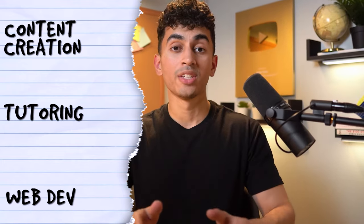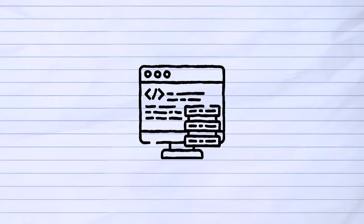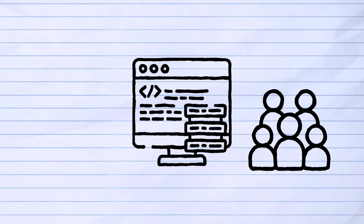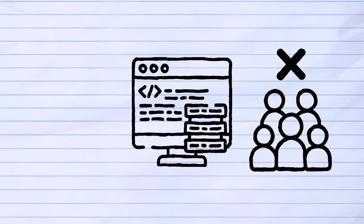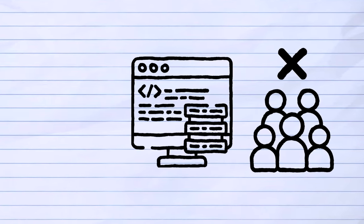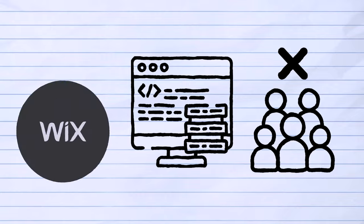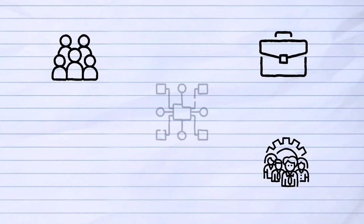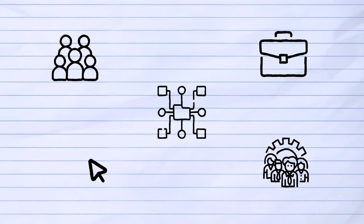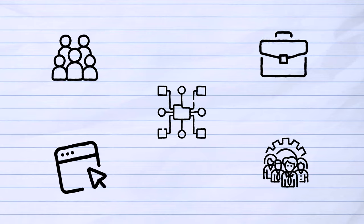The third side hustle is web development — and the reality is you don't even need to know how to code. Back in high school, I set up and managed a website for an organization in my community, and they didn't want me to code anything from scratch. They just needed someone who could use a platform like Wix and set up a couple of web pages. If you're young and tech savvy, that's not a super hard thing to do. There are probably tons of people, businesses, and organizations in your local community who want someone to help them set up a simple website.